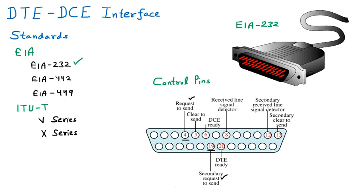If a request is sent and the other party agrees, that is called Clear to Send. Pin number 5 is Clear to Send, meaning the other party is ready to receive the data and signals that it is clear to send. If pin number 5 is not working, pin number 13 is the secondary Clear to Send, allowing the reply to be sent through pin 13.